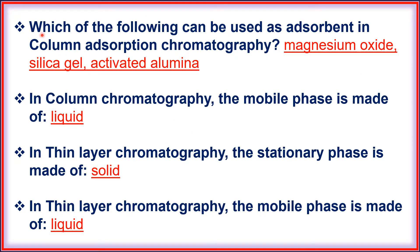Which of the following can be used as adsorbent in column adsorption chromatography? That is magnesium oxide, silica gel, and activated aluminum. In column chromatography, the mobile phase is made up of liquid.